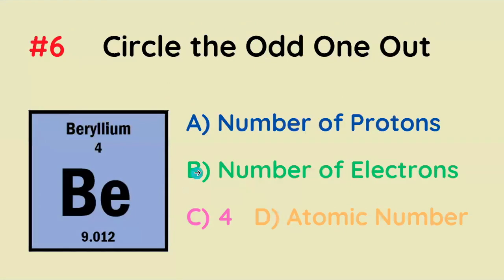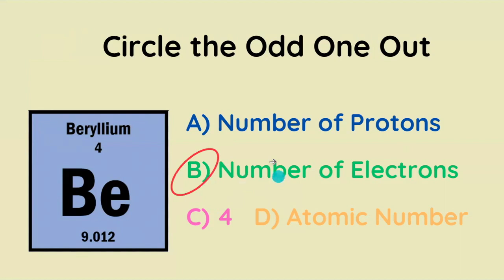Circle the odd term out: number of protons, number of electrons, four, or atomic number. The correct answer is number of electrons, because all three of the other choices are the exact same thing for beryllium.